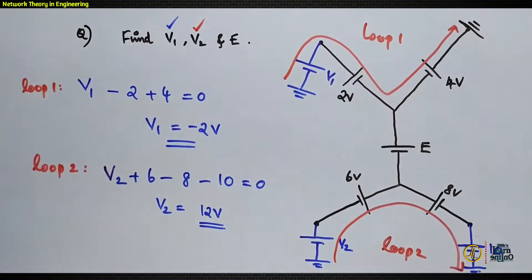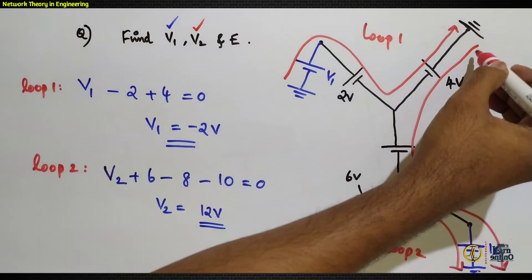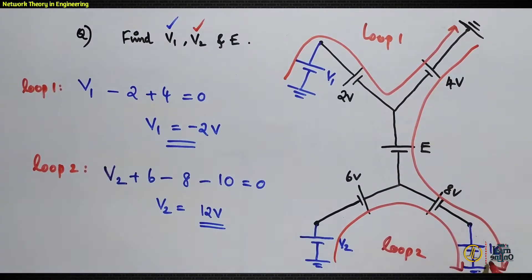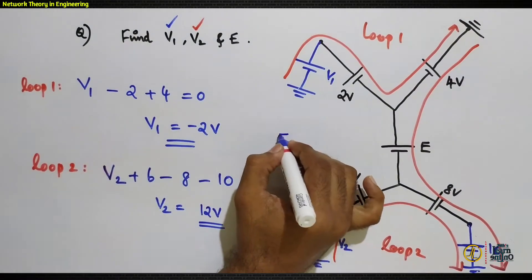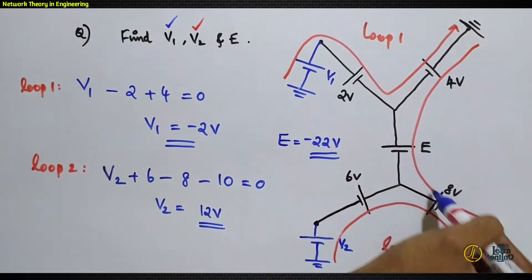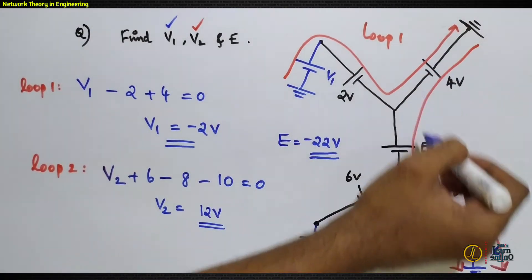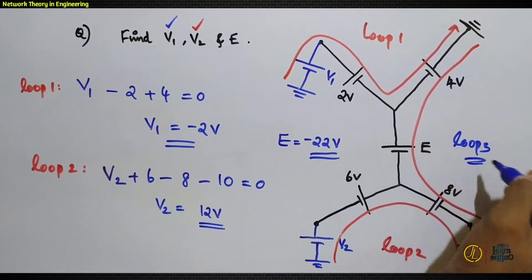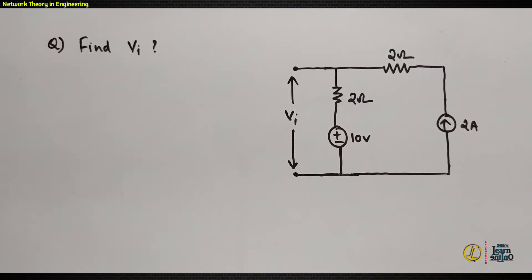Next, we find e by considering Loop 3. This loop contains 4V, e, 8V, and 10V. Applying KVL to Loop 3 — noting that the two grounds are common, making it a closed loop — gives the value of e as −22V. You can do this yourself for practice.